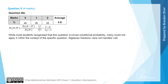From the examiner's report, 28% of students got both marks. Most students recognised this involved conditional probability but many could not apply it within the context of the question. Algebraic fractions were also not handled well — knowing that dividing fractions requires multiplying by the reciprocal is very important when answering questions like this.